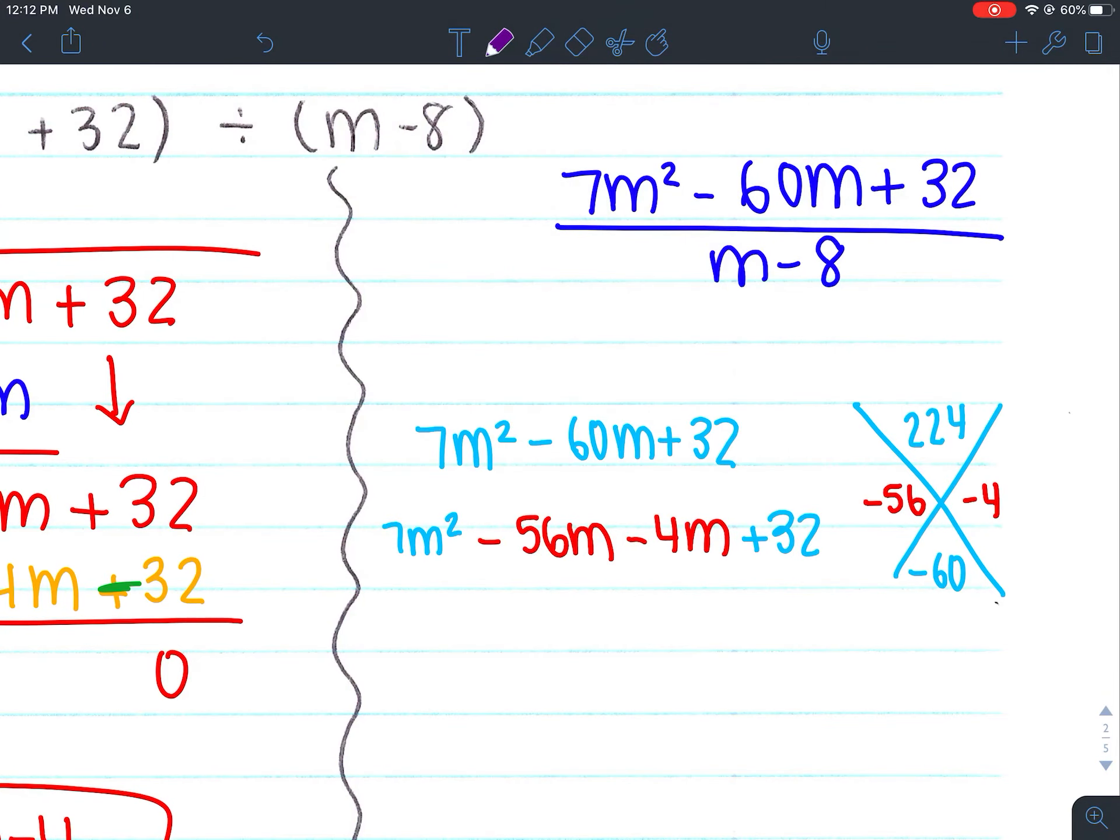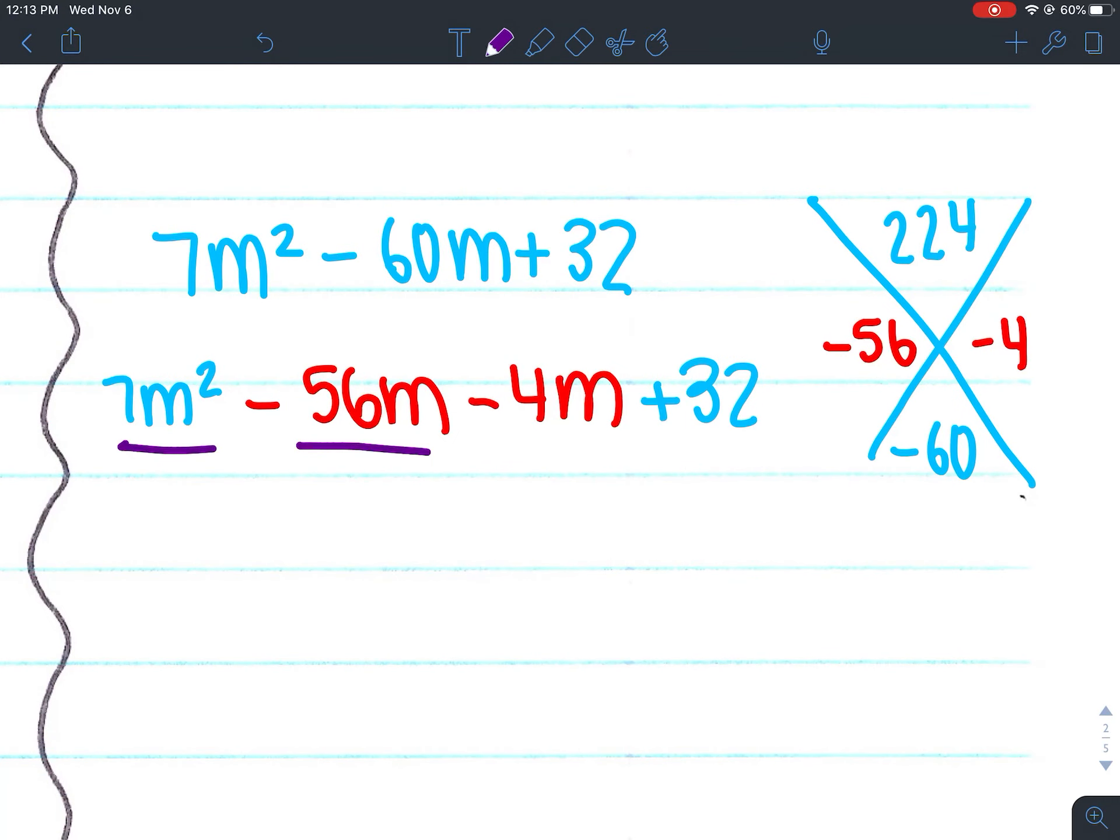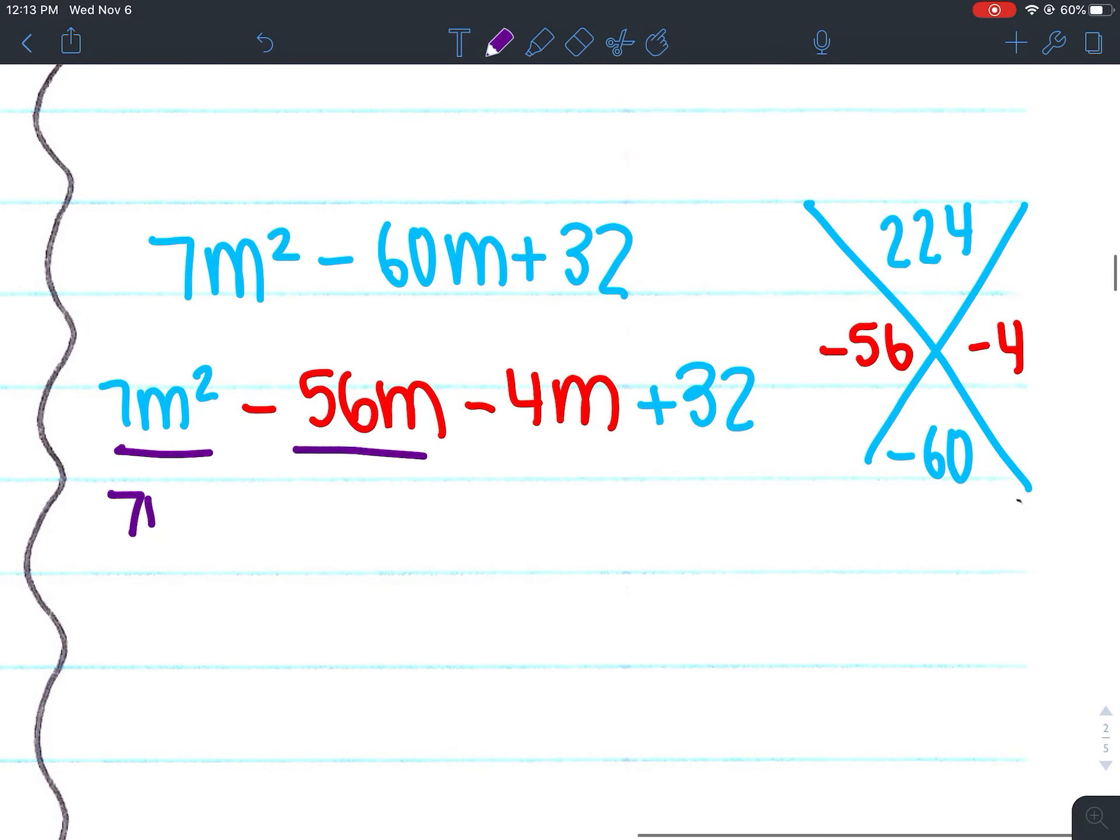And again, it doesn't matter if your 4 or your 56 come first. Okay. We're going to find the GCF of the first two terms, which is 7m. So that's going to go on the outside of my parentheses. So then my remaining would be m - 8.